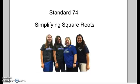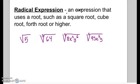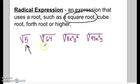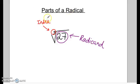This is standard 7.4: Simplifying Square Roots. A radical expression is an expression that uses a root such as a square root, cube root, fourth root, or higher. Today we are specifically going to talk about square roots and how to simplify them. The index is the smaller number that tells you what type of root it is. The number underneath is called the radicand. For square roots, the index is technically 2 but we don't write it — it's understood.